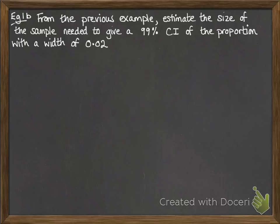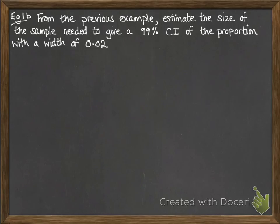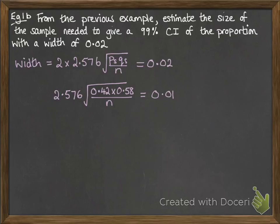The next example takes the same situation we've just come from and extends it a little bit. We want to estimate the size of the sample that would be needed to give a 99% confidence interval of the proportion with a width of 0.02. If we look back at that previous example, you can see that the confidence interval is quite wide — the proportion could be anywhere between 29% and 45%, which is really quite a wide range. So if we took a bigger sample, we know we would get a better approximation. The width of the confidence interval is 2 times the margin we add on or take away, and we need that to equal 0.02. So putting in the numbers that we know and rearranging that calculation, we get our required N.